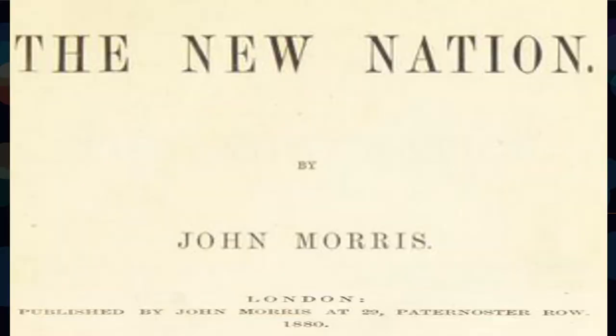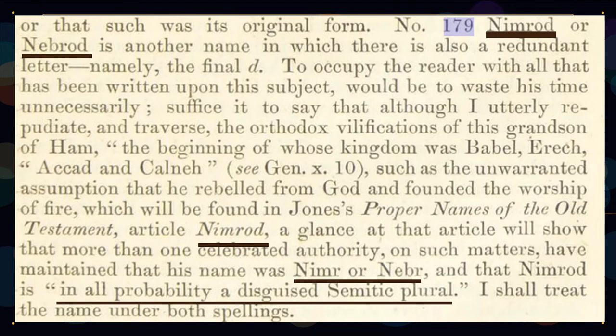We're going to quickly look at some of the understandings of the word Nimrod across a number of ancient languages. This comes from John Morris's book, The New Nation in 1880. The author is demonstrating all of these words connected to Nimrod's root. You see that N-I-M-R, N-E-B-R as in Nebraska, and N-E-B-R-O-D are all related to Nimrod. The author also offers that there is an argument that there's a probability that Nimrod is a disguised Semitic plural.